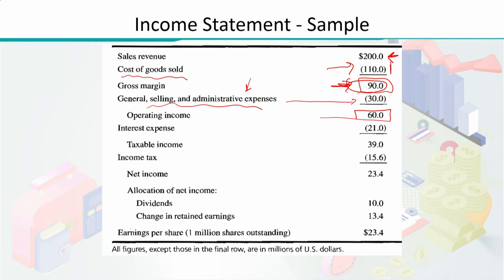From the operating income, we subtract interest expenses. For example, the firm had borrowed a loan and pays interest annually. That interest payment turned out to be 21 million dollars. Subtracting this from operating income gives us the income on which tax will be charged — therefore we call this the taxable income, which is 39 million dollars.